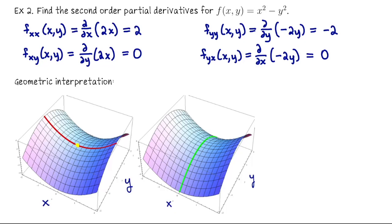The easiest interpretation to see is the first line. If I differentiate with respect to x twice, I'm treating y like a constant the entire time, so that calculation happens in a single plane. The fact that we got 2 tells us that we're concave up in that plane. Same story for the second derivative with respect to y — we treated x like a constant, and the negative 2 tells us that any curve of intersection with an x equals constant plane is going to be concave down.